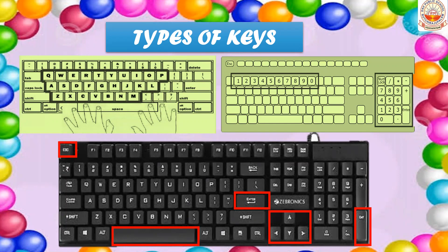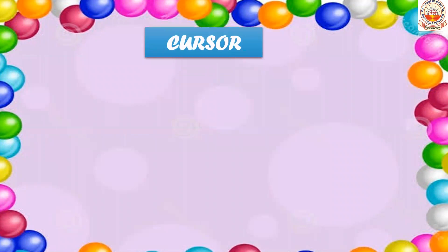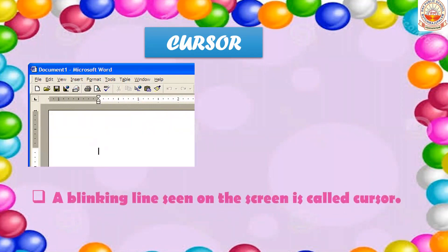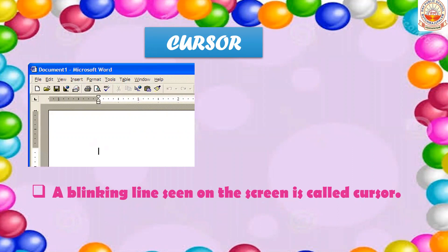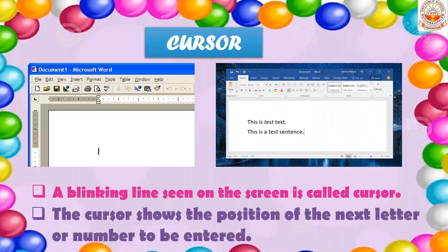Before that, first we will learn about the cursor. You might have observed a small blinking line on the screen whenever you open an application like MS Word or any other application. A cursor is a blinking line which is seen on the monitor or screen when we type anything using a keyboard.